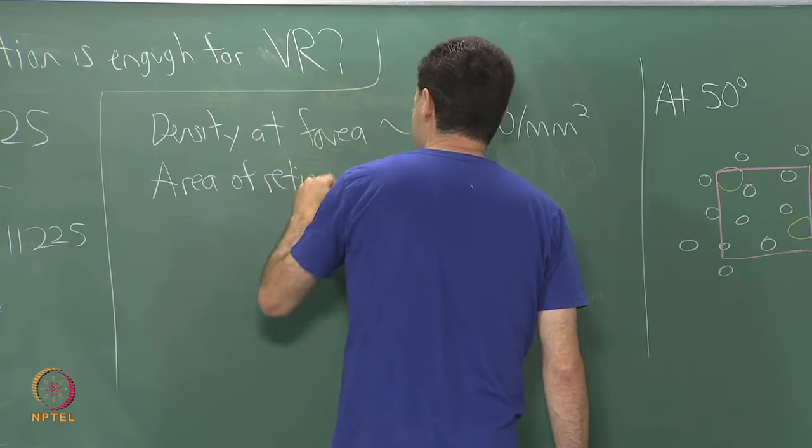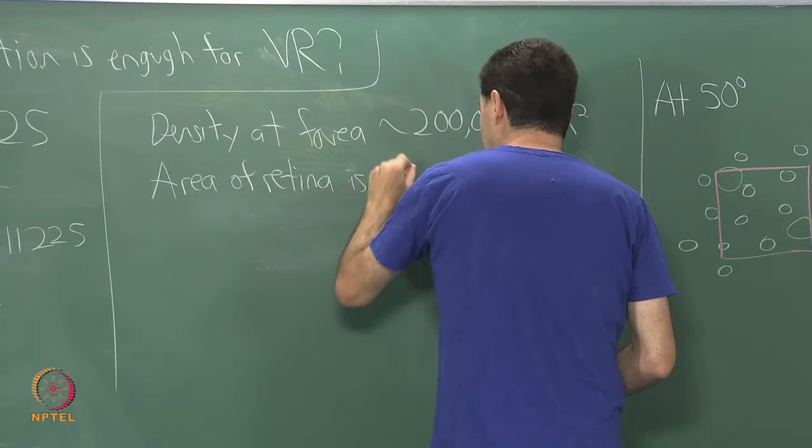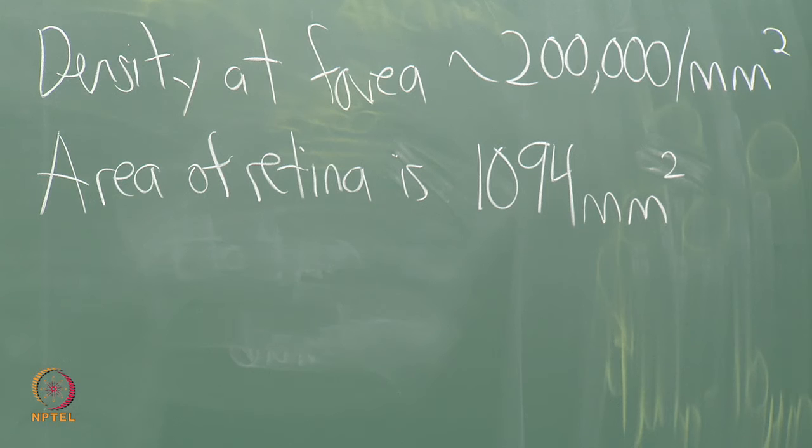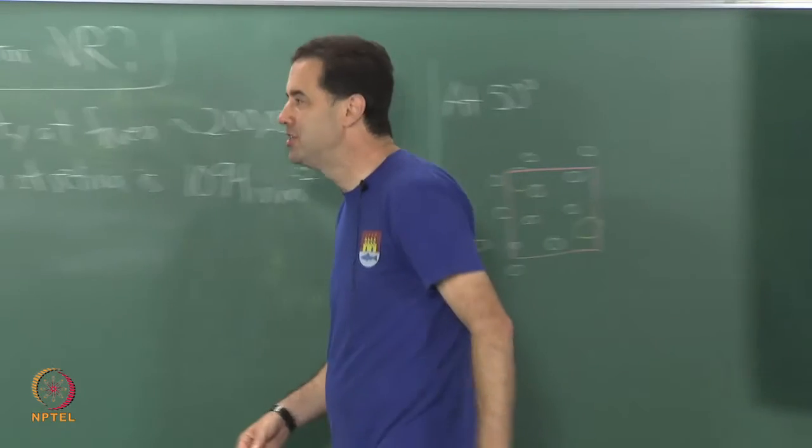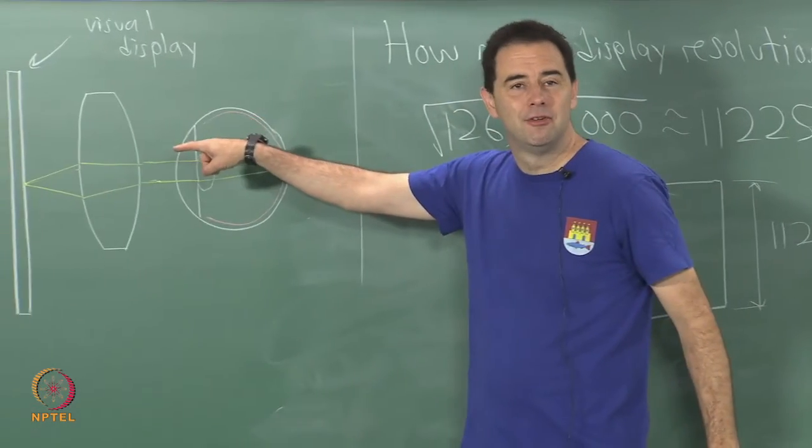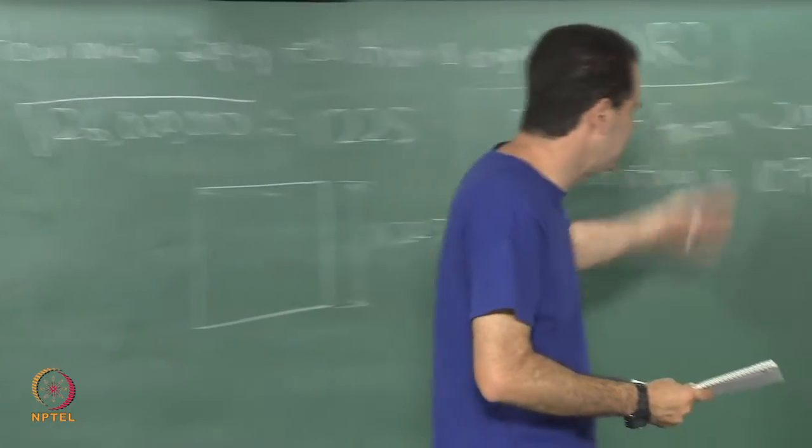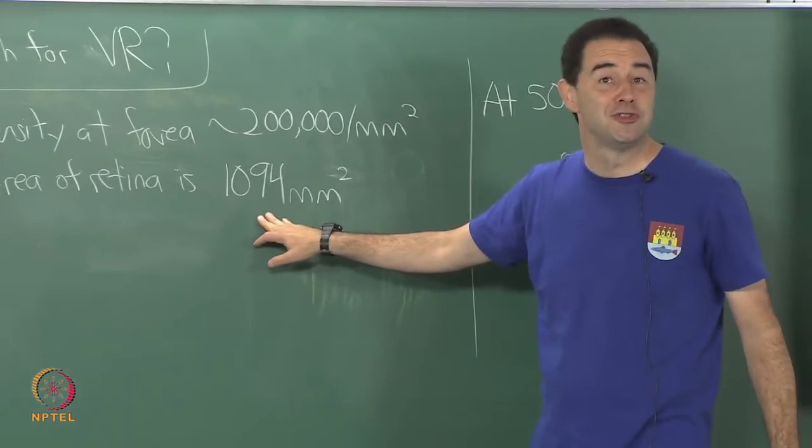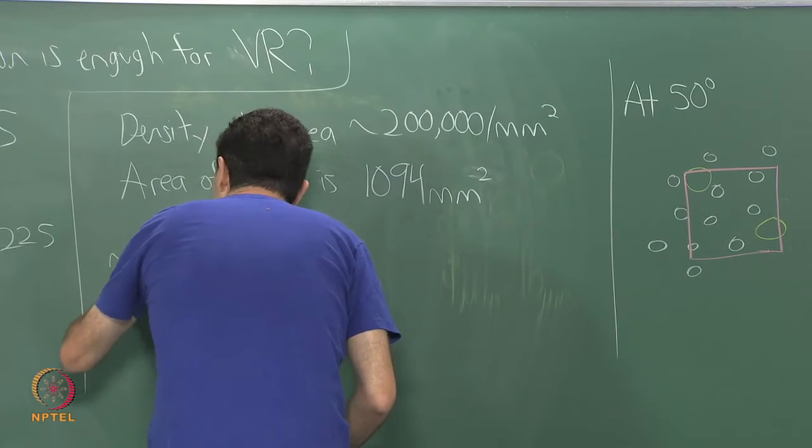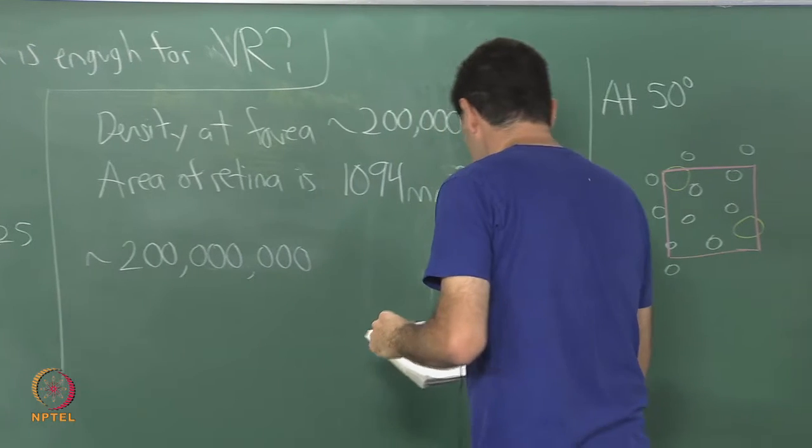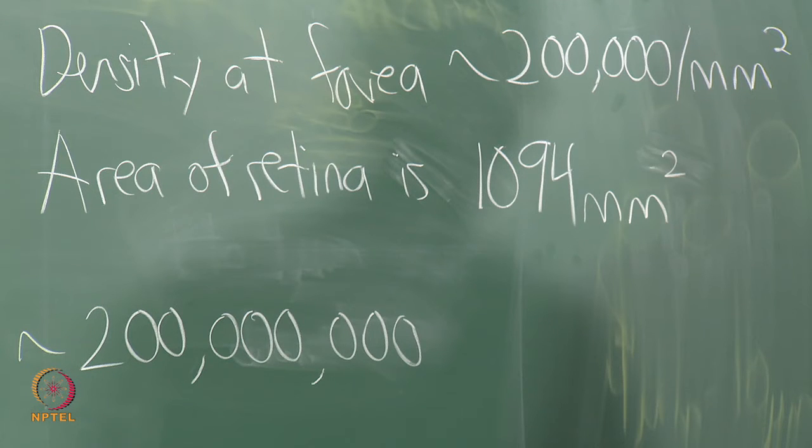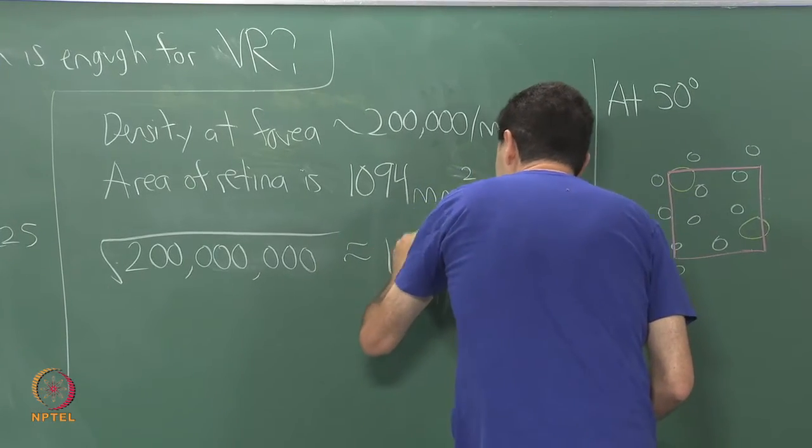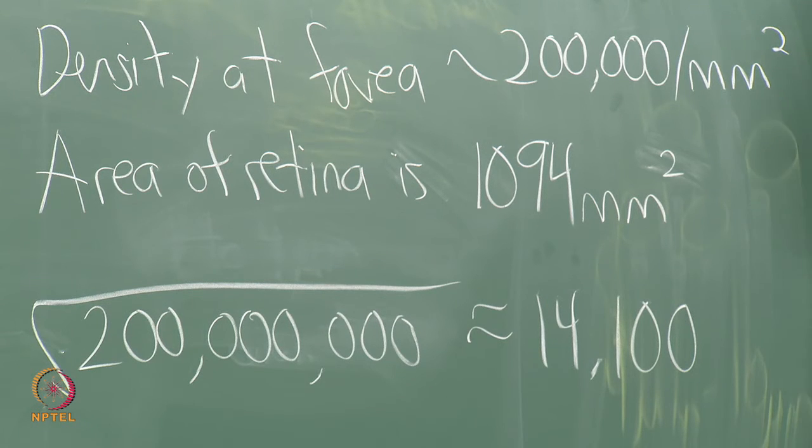If I look at it that way, it turns out that the area of the retina - I looked this up before class - is 1094 millimeter squared. There must be some variations among humans, but roughly a thousand square millimeters. If I imagine the retina had maximum density in all places, that's kind of a strange assumption. If I take the square root of 200 million that I get - because if I had maximum density spread across roughly a thousand square millimeters, this would be about 200 million photoreceptors.